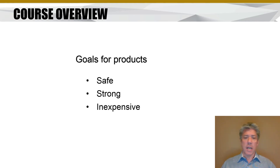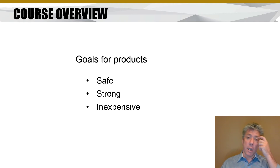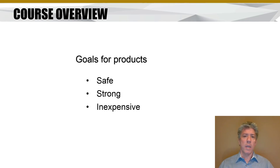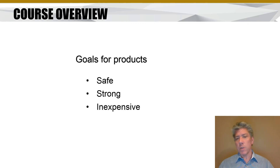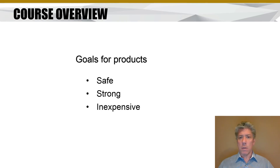The goals for things we design and make are that they be safe, strong, and inexpensive. The more material you put into a design, the more it costs to make. Material costs are usually not the primary cost of a product — you'd be surprised how low the value of all the materials in your car is as a fraction of the purchase price. The value of a car is really the configuration of those materials and the design of the components to achieve their intended function.